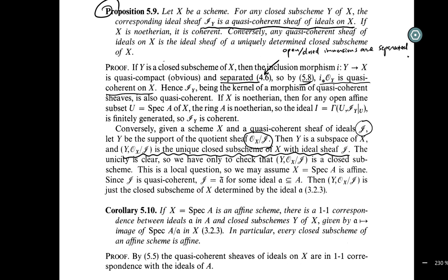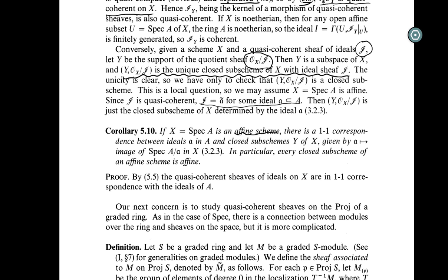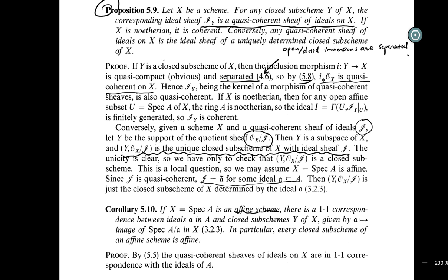Conversely, given a quasi-coherent sheaf of ideals I, consider the quotient sheaf O_X/I. Let Y be the support of this quotient sheaf. Then Y is the unique closed sub-scheme of X with ideal sheaf I. Locally on affine opens, this reduces to the affine case: I corresponds to an ideal of A and the closed sub-scheme is Spec(A/I). In particular, if X = Spec A is affine, there is a 1-1 correspondence between ideals of A and closed sub-schemes of X. So we have a very nice understanding of open immersions, closed immersions, and ideal sheaves characterizing closed sub-schemes. Stop here.